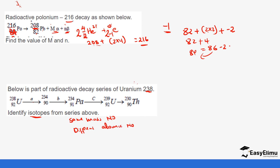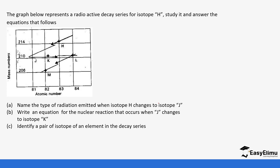Isotopes share the same atomic number but have different mass numbers. So uranium-92 and uranium-92 (i.e., the two uranium isotopes in the series) form one isotope pair. We also have thorium-234 with atomic number 90 and thorium-230 with atomic number 90 forming another isotope pair. Additionally, uranium-238 and uranium-239, both with atomic number 92, form a pair.